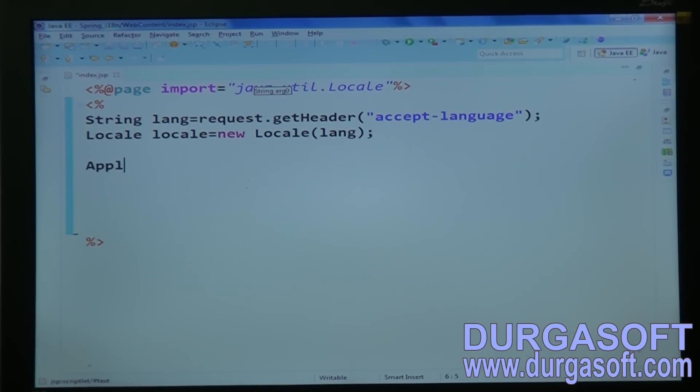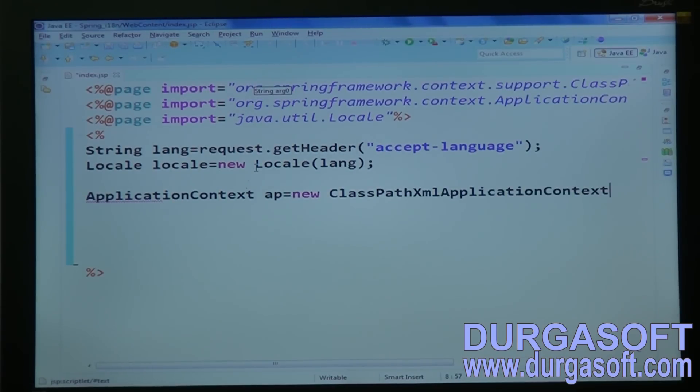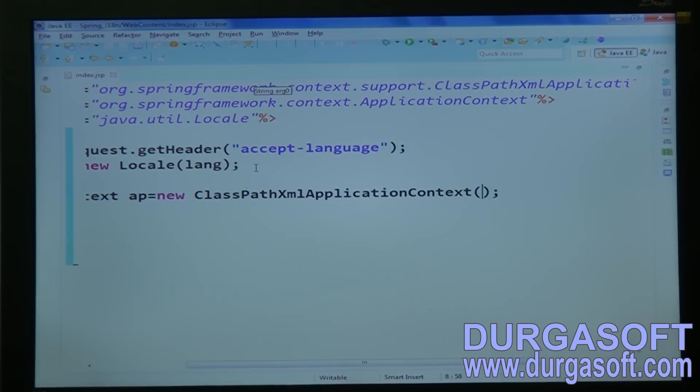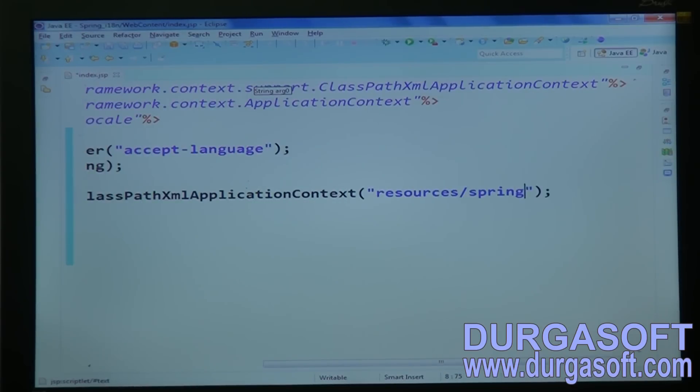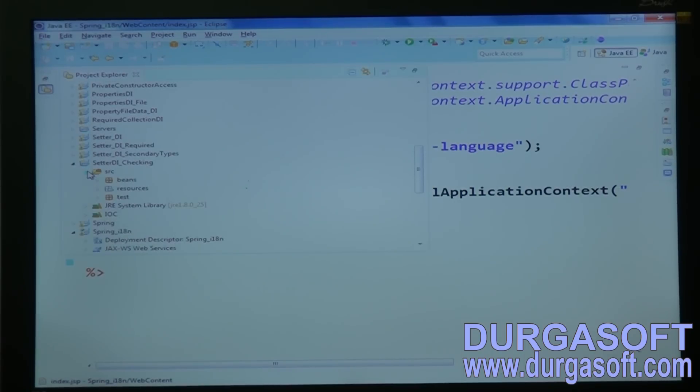Then next, create application context object ap equal to new class path XML application context. Load your resource gear, resources slash spring XML file. In that XML file, what I am expecting, a base name of your properties file. So create a resource and configure base name of our properties file.